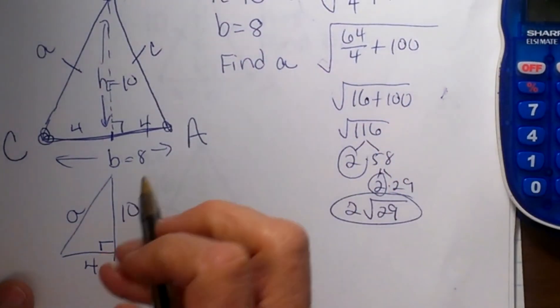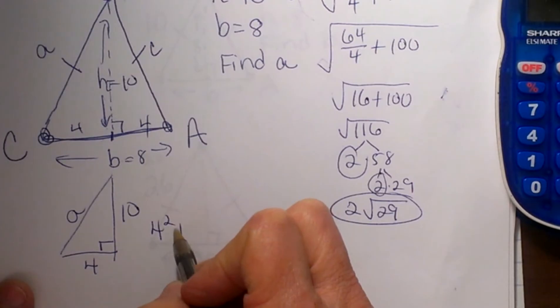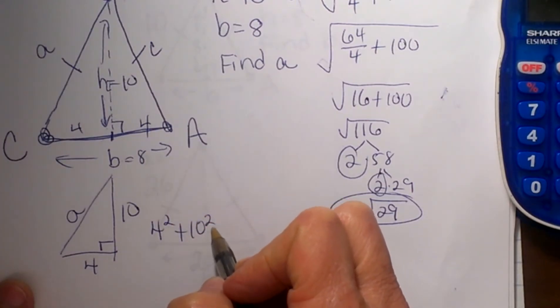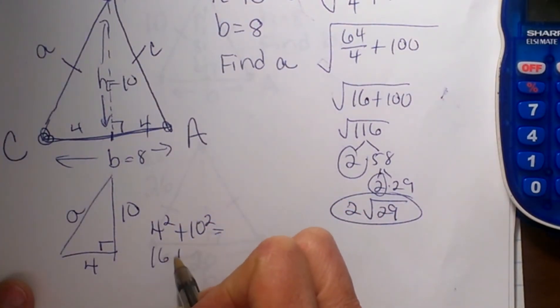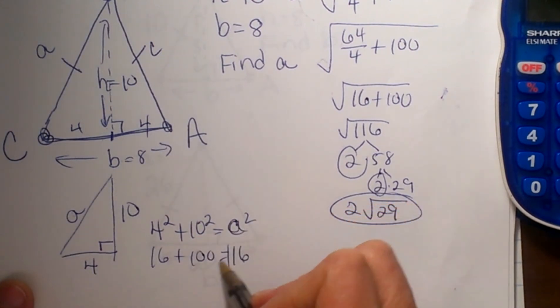So I take 4 squared plus 10 squared, which is 16 plus 100, or 116. That equals a squared in this case. Taking the square root of that, we get 2√29, which is the same answer. Just another way to think about it.